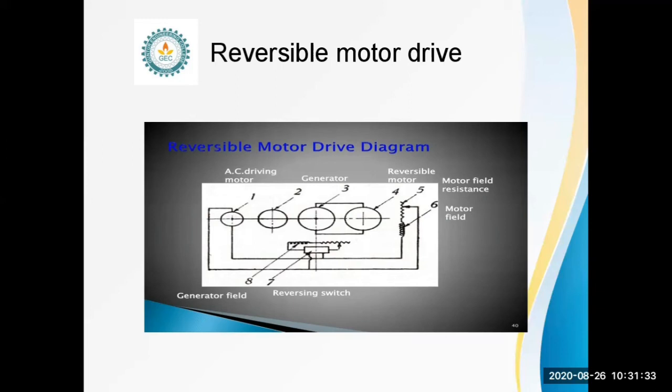This causes the table to move in the reverse direction. The quick return effect is produced by regulating the field current of the generator. The length of stroke can be adjusted by adjusting the gap between trip dogs.